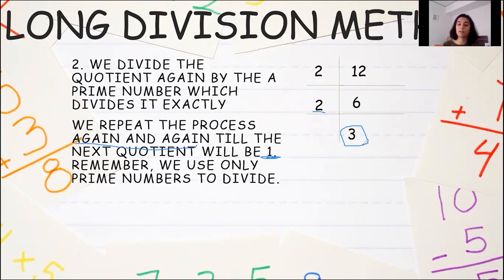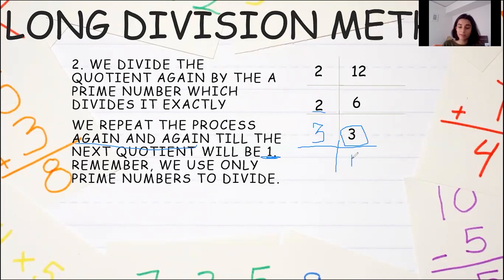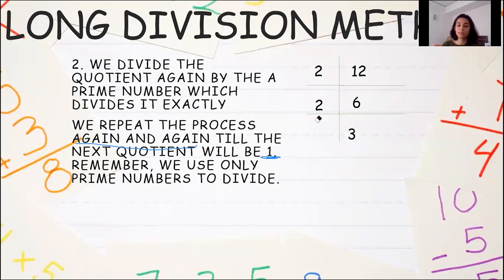Remember, we only use prime numbers to divide. Now our next quotient is 3. We write 3 here, and since 3 is the smallest prime number that divides 3 exactly, we would write 3 on the left and 1 at the end. But since 1 into 3 gives you 3, there is no need to write 3 again and then 1 — we can simply leave it at 3 itself.